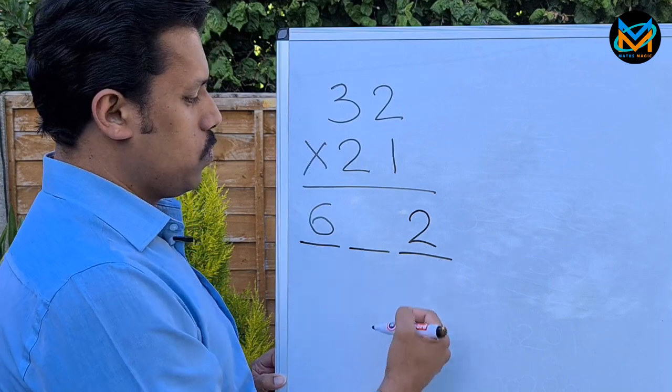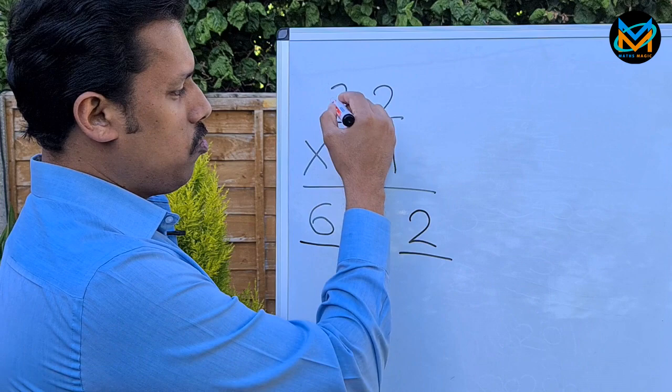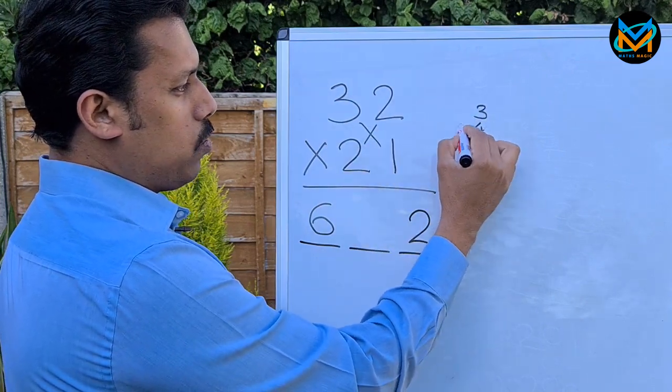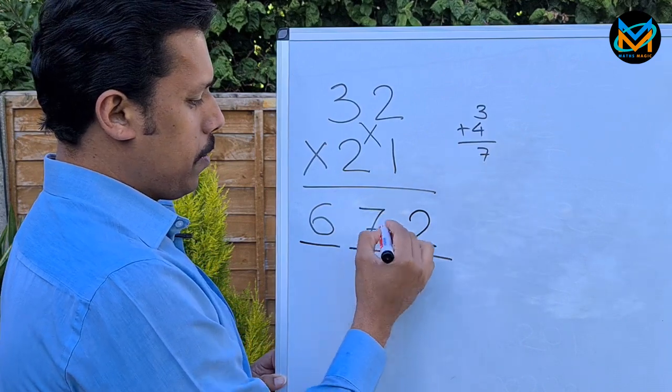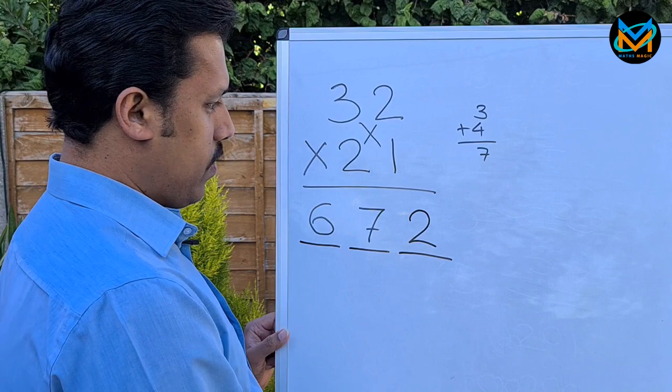To find the middle number, just cross multiply: 3 into 1 is 3, 2 into 2 is 4, and add those digits, which gives 7. So your answer is 672. Let's find another example.